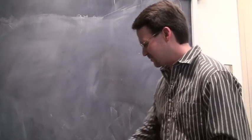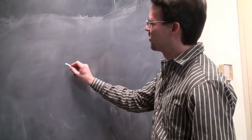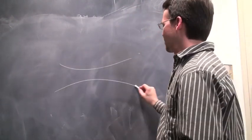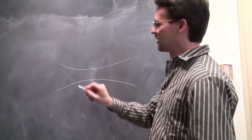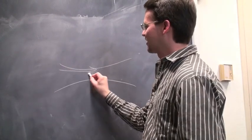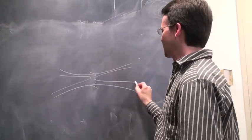What I read about reconnection is that you have magnetic fields that point in opposite directions, and then they break apart and cross-connect and look something like this.